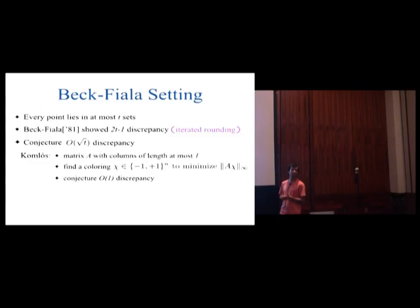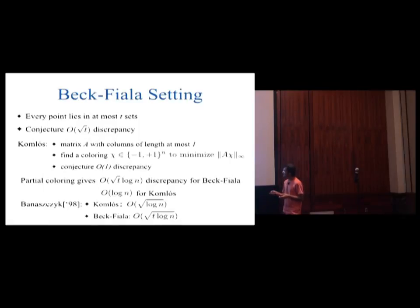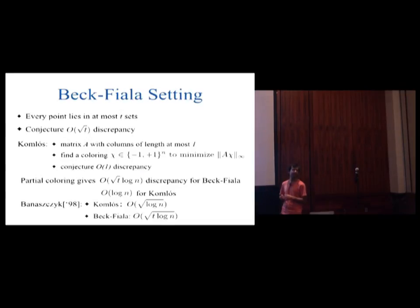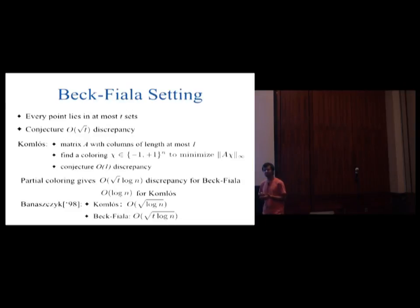It is a simple exercise that the Komlós conjecture implies the Beck-Fiala conjecture. Using a technique called the method of partial colouring, which is very popular in discrepancy, you can show colourings of discrepancy root t times log n in the Beck-Fiala case, where n is the number of points. Similarly, you can show a bound of log n for the Komlós problem, where n is the number of columns in matrix A.